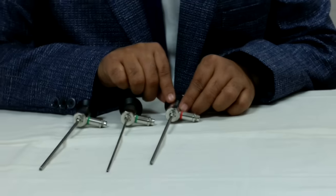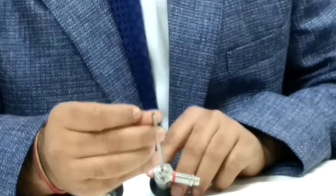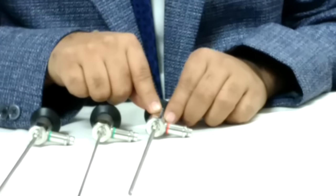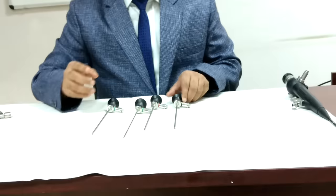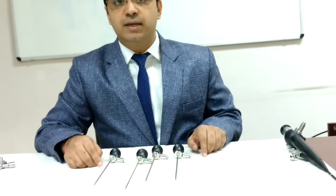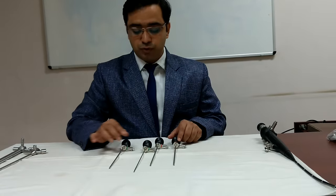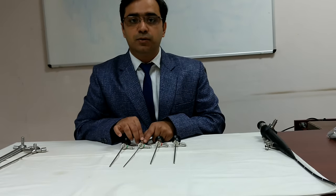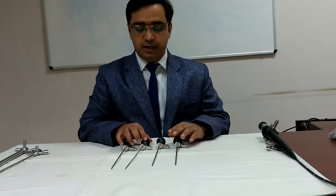Red means 30 degree. You can see the end is 30 degree tilted. So red color coding means 30 degree. Black color coding means 45 degree. Another endoscope which right now I am not having is 70 degree which is having yellow coding. So you should always remember green 0 degree, red 30 degree, black 45 degree, yellow 70 degree.